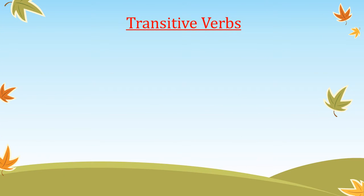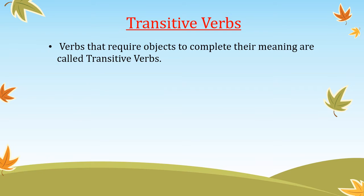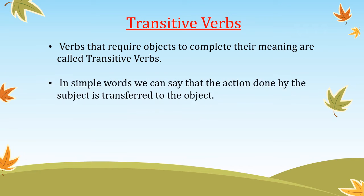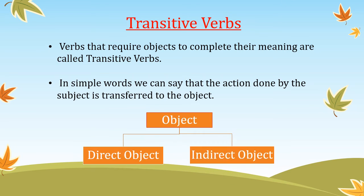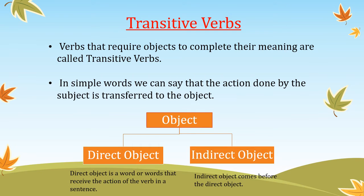Transitive verbs: verbs that require objects to complete their meaning are called transitive verbs. In simple words, the action done by the subject is transferred to the object. Objects can be of two types: direct object and indirect object. A direct object is a word or words that receive the action of the verb in a sentence. Indirect objects are the words that receive the action indirectly, and they occur before the direct object.